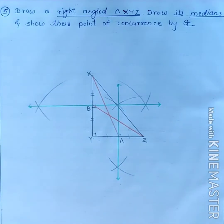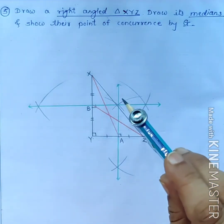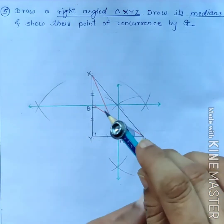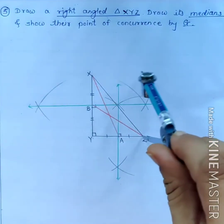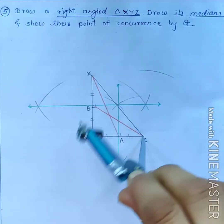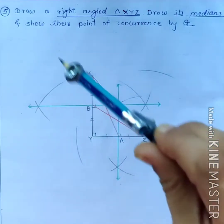Now, third median. Find out the midpoint of side XZ. Midpoint of side XZ. Keep your compass on point Z and do these arcs.